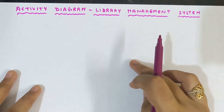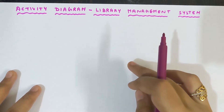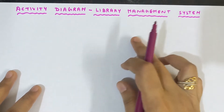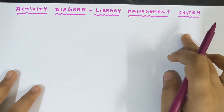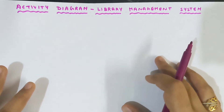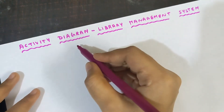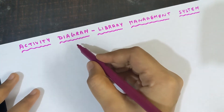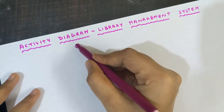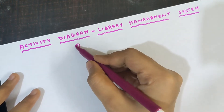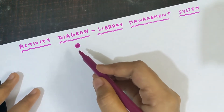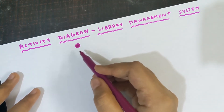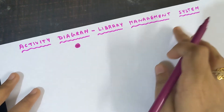So what is the first step in drawing an activity diagram? There will be a process for the library management system, and the first step is we need to start the process. You need to draw a circle and shade it completely inside — this is known as the start symbol. You need to start the process of the library management system.